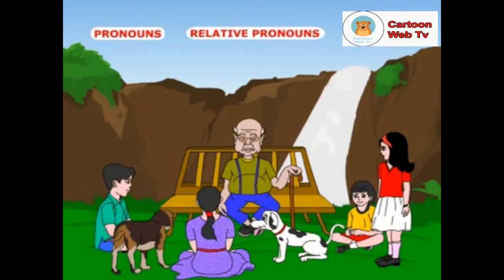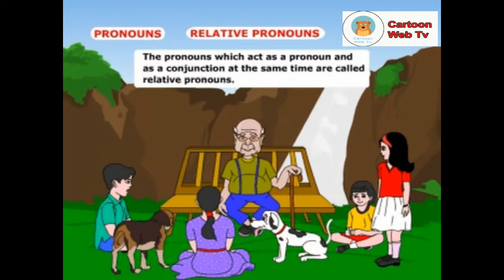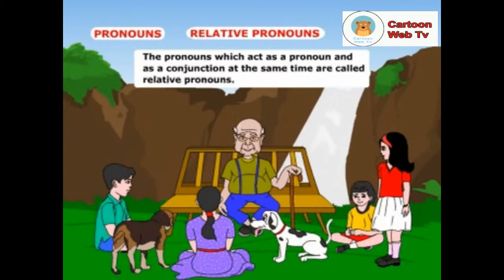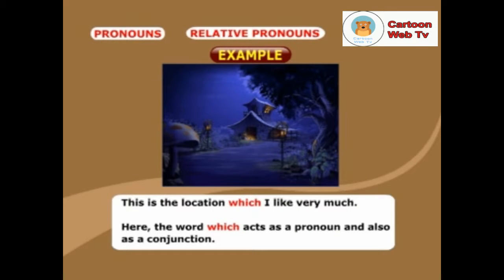Okay. Can any one of you explain relative pronouns with examples? Sure, Grandpa. The pronouns which act as a pronoun and as a conjunction at the same time are called relative pronouns. Look at this example: this is the location which I like very much. Here, the word which acts as a pronoun and also as a conjunction.